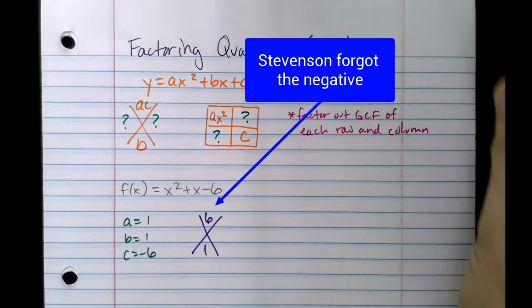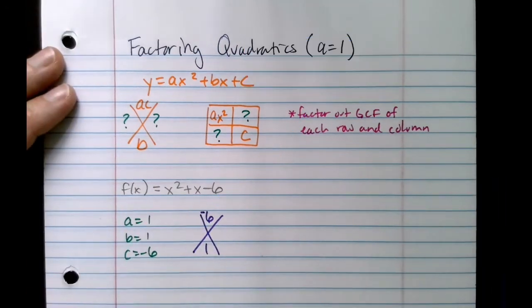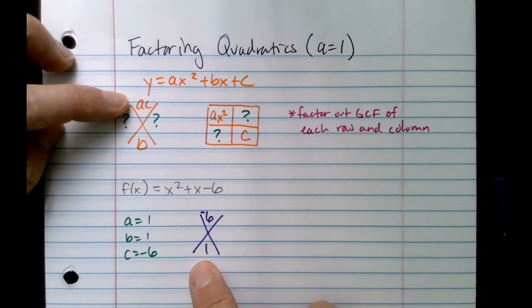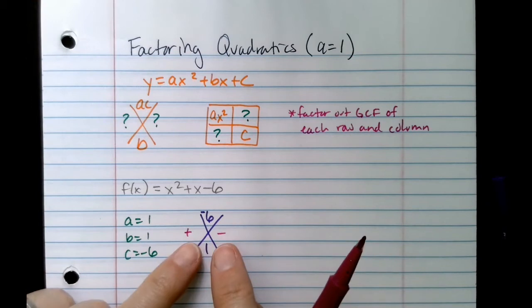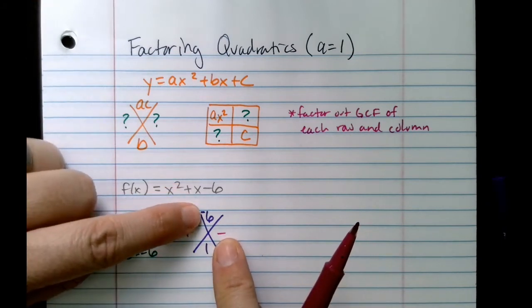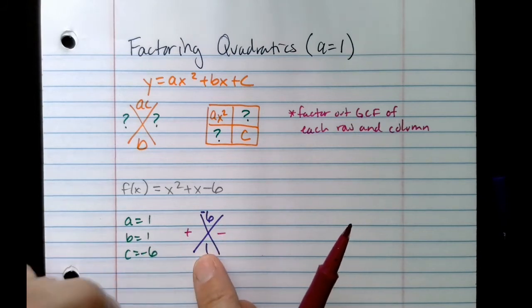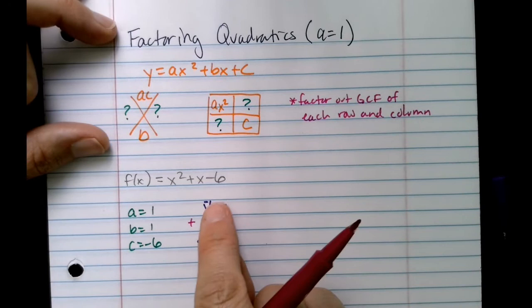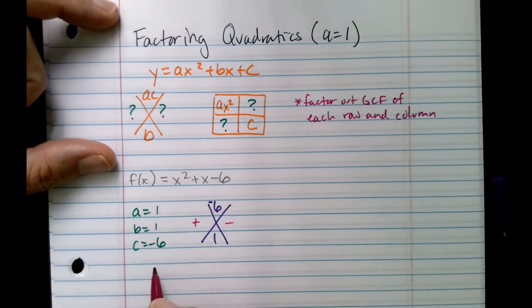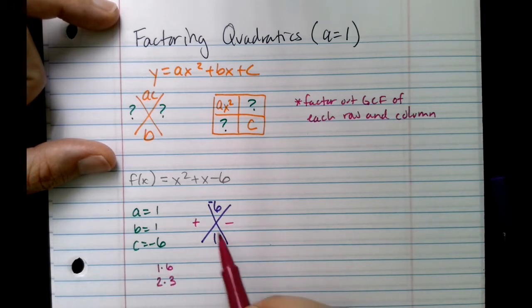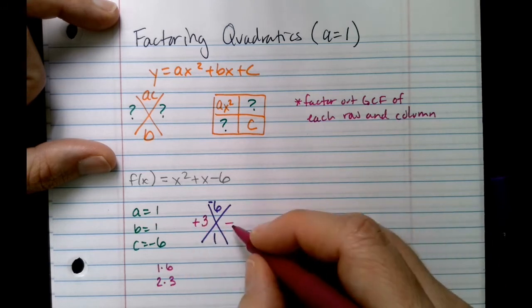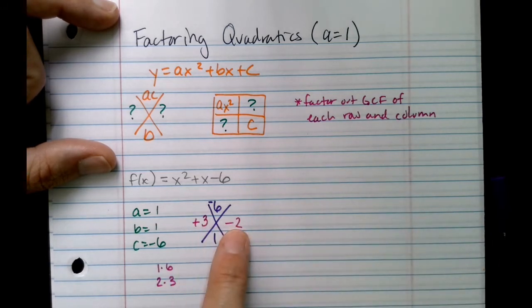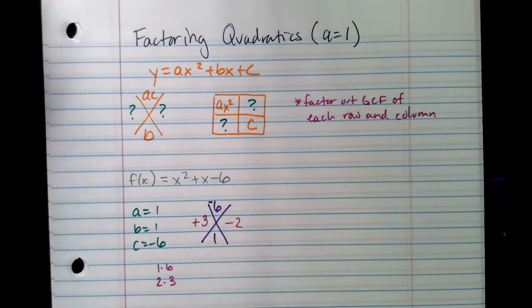Whatever B is, in this case it's positive 1, it's going to go in the bottom. Now my product is negative but my sum is positive. What that tells me is my signs here have to be opposite, because a positive times a negative is a negative. But when I add these two together, the signs are different, I can end up with a positive result. So what can these numbers be? Let's focus on 6. What are the different products I can make? 6. I could do 1 times 6, I could do 2 times 3. Which of those pairs will have a difference of 1? The answer is 2 and 3.